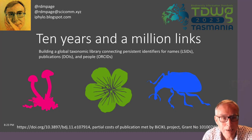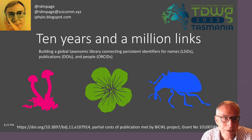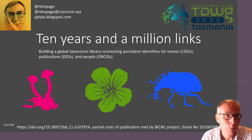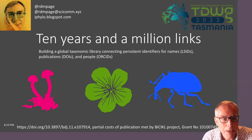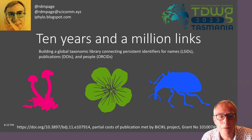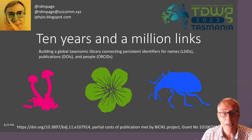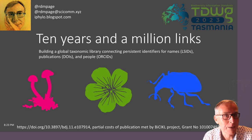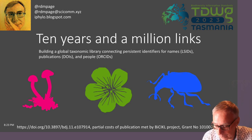Hi everybody, I hope you're having a great conference. My talk, '10 Years and a Million Links,' is about the last decade of work I've been doing on trying to connect taxonomic names to the literature. Before I start, I should acknowledge there's a paper that describes this work, published in Biodiversity Data Journal with the assistance of the Bicycle Project. Open access is wonderful except when you don't have any money to publish, so thank you to Bicycle for supporting this work.